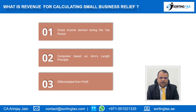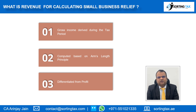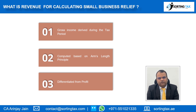Once you prepare your financial statements on the basis of arm's length criteria, that is where you need to see whether the revenue meets the three million threshold. Revenue and profit need to be differentiated — the eligibility is based on the revenue, not on the profit.